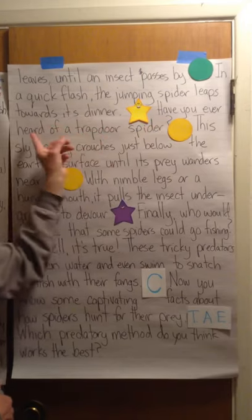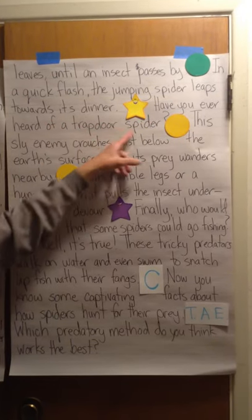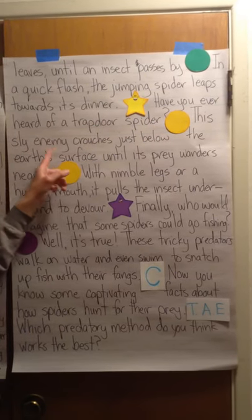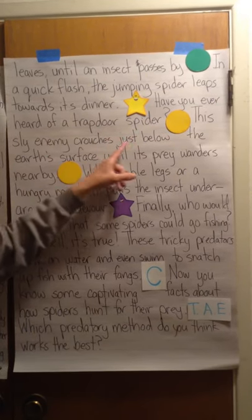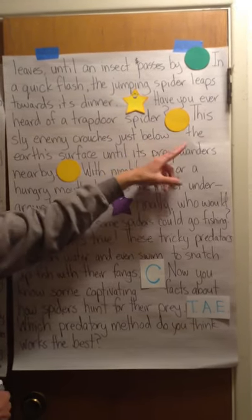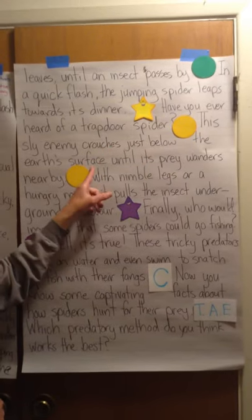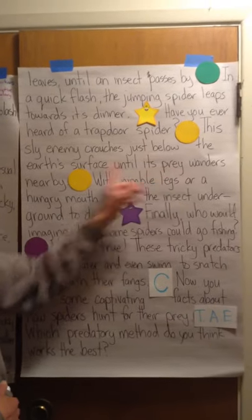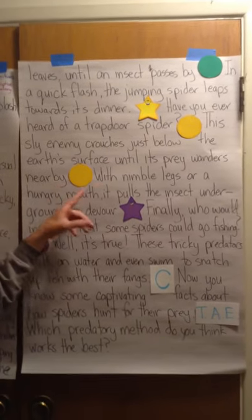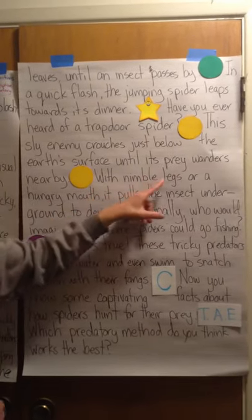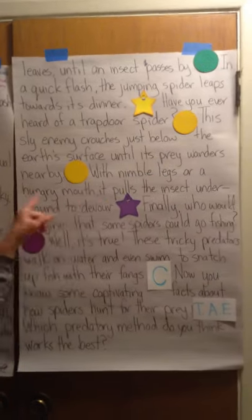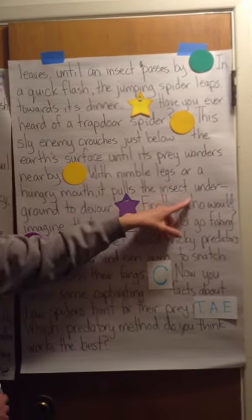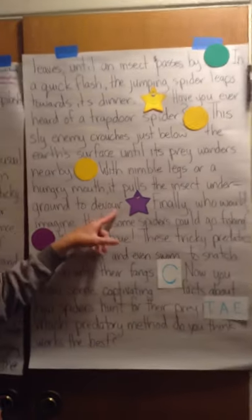Have you ever heard of a trapdoor spider? This sly enemy crouches just below the earth's surface until its prey wanders nearby. With nimble legs and a hungry mouth, it pulls the insect underground to devour.